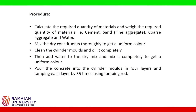Procedure: calculate and weigh the required quantity of materials — cement, sand, fine aggregate, coarse aggregate, and water. Mix the dry constituents thoroughly to get a uniform color. Clean the cylinder molds and oil them completely, then add water to the dry mix and mix completely to get a uniform color.